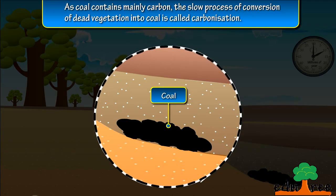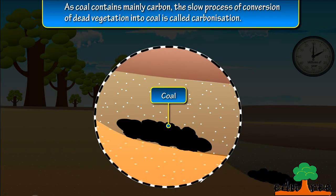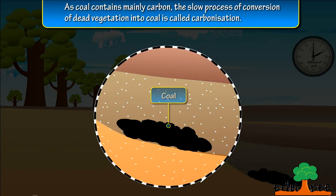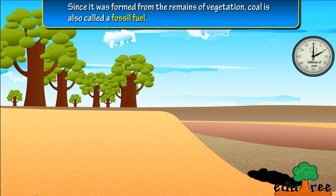...of dead vegetation into coal is called carbonization. Since it was formed from the remains of vegetation...